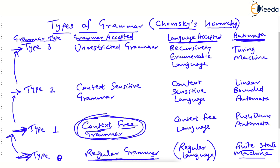If a grammar is context free — that is Type 1 — the type of language generated is called a Context Free Language, or CFL. A regular grammar generates a regular language. The machine used to implement context free languages is called a Pushdown Automata, whereas regular languages are solved using finite state machines like DFA or NFA. I hope you have understood the difference between CFG and regular grammar. More about this in the next video. Thank you.